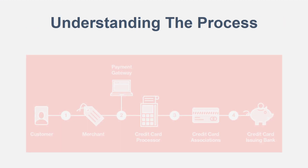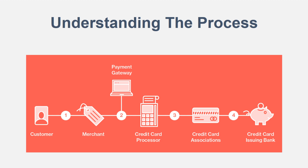First off, understanding the exact process that is going on. There's this nice little chart that I found. When a customer comes to your website, you are the merchant. A customer comes in, they find a product, and then it directs them to a payment gateway, which is a website that allows them to punch in all their information. That payment gateway then sends the information to the credit card processor. Then there's the credit card association, such as Visa or MasterCard. And then the credit card is issued to the bank. That is how the whole entire transaction occurs.